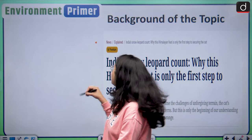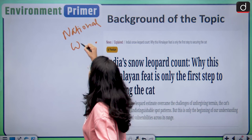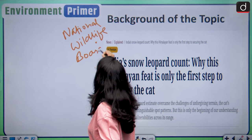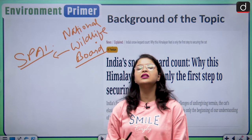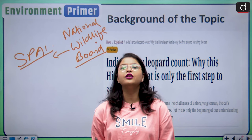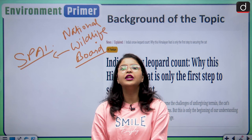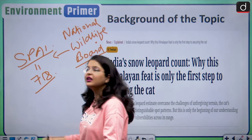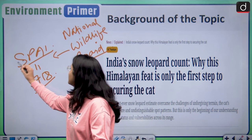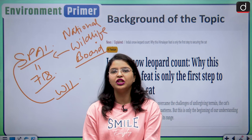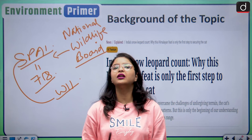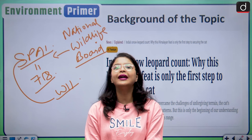Regarding the background of today's topic: recently, a meeting was held for the National Wildlife Board, and in this meeting, a report was submitted by the SPAI — the Snow Leopard Population Assessment in India. This means we have conducted the very first successful population assessment of snow leopards. Currently, there are 718 snow leopards in India. The SPAI works under the WII — the Wildlife Institute of India — which further works under the Ministry of Environment, Forest and Climate Change. This is a very significant step towards protection and conservation of the snow leopard species.